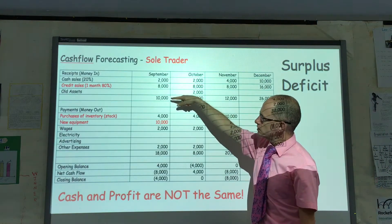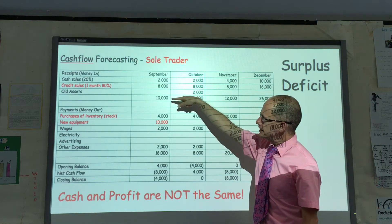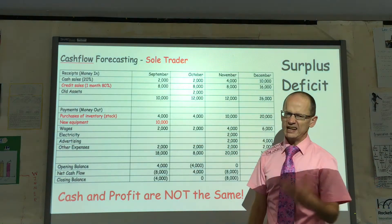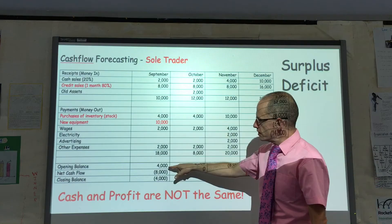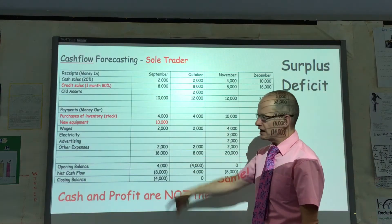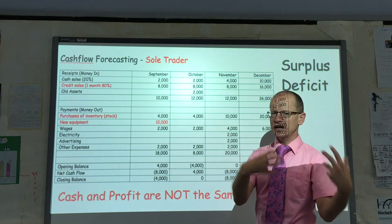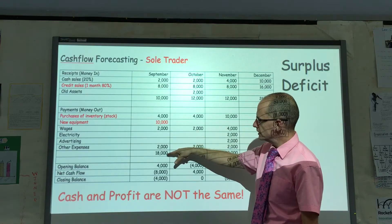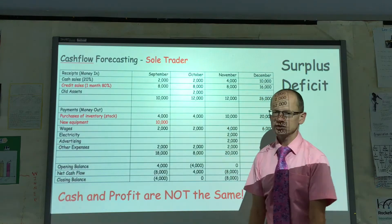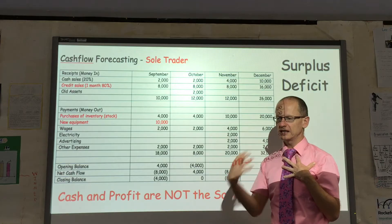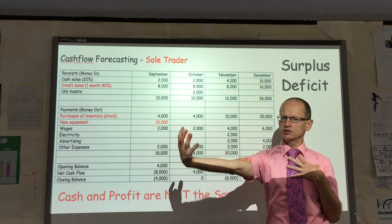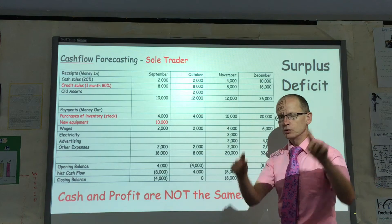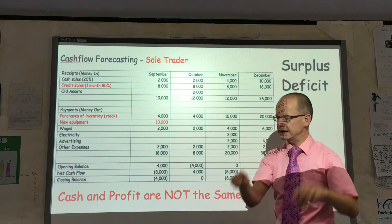In September the total money in is 10,000 and the total money out is 18,000. The opening balance is 4,000. Net cash flow is just the difference between the 18,000 and 10,000 — if a business has 10,000 coming in and 18,000 going out, obviously it's spending 8,000 more than it has coming in, hence why we show it in brackets.